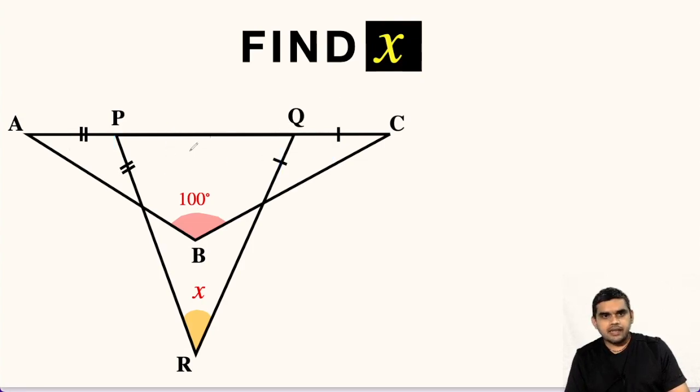That means this triangle and triangle PQR. In this triangle here, this angle B is 100 degrees. So we are asked to find the value of angle R, that is x.